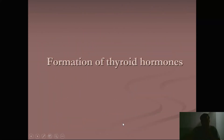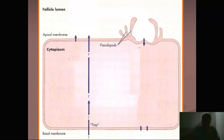Moving toward a very important part of the chapter — the formation of thyroid hormones, that is the biosynthesis of thyroid hormones. This has been asked many times in GTO examinations. A very important element for the synthesis of thyroid hormone is iodide.